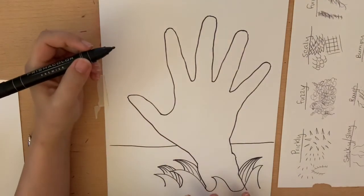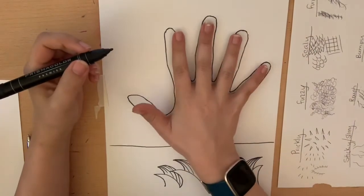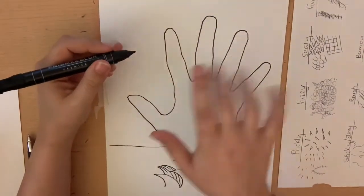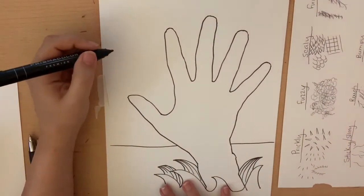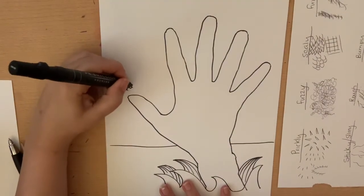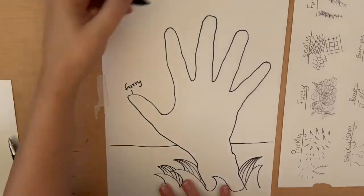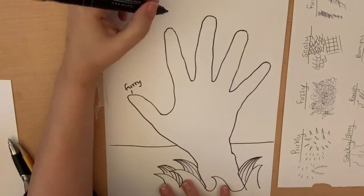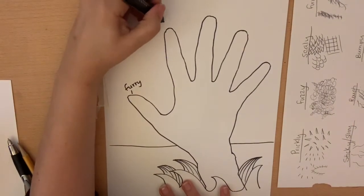And what you need to do is you need to pick five fingers or four fingers and a thumb. You need to pick five textures. So I want to do furry. That's that one. I'm going to pick prickly. I love cactus. Or cacti. Sorry.